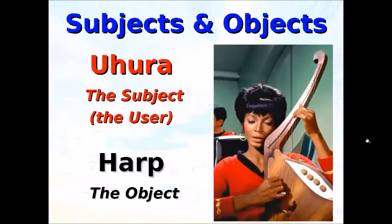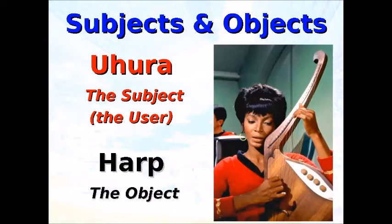We know that subjects use objects. Subjective thinking is typically opinions. So when Lieutenant Uhura is making music on this Vulcan harp, is the music good? It depends on the opinion of the person. When senior management accredits a solution, it's always for a fixed length of time — not forever. But objectively, this harp has four knobs, and that's not going to change unless somebody makes a change to it. Objective thinking is typically much more static.